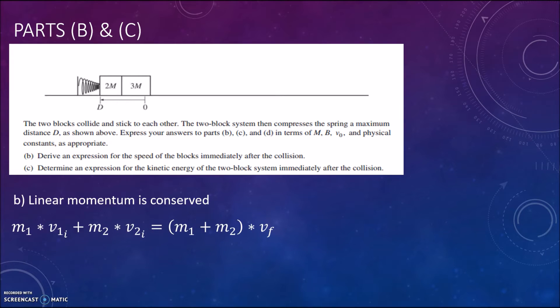And because we know it's a perfectly inelastic collision which means that they stick together once colliding, we can simply for the final momentum say the sum of the masses times their final velocity. So substituting in the values of 2m for mass 1 and 3m for mass 2, we get 3m times the initial velocity of the block is equal to 5m times the final velocity.